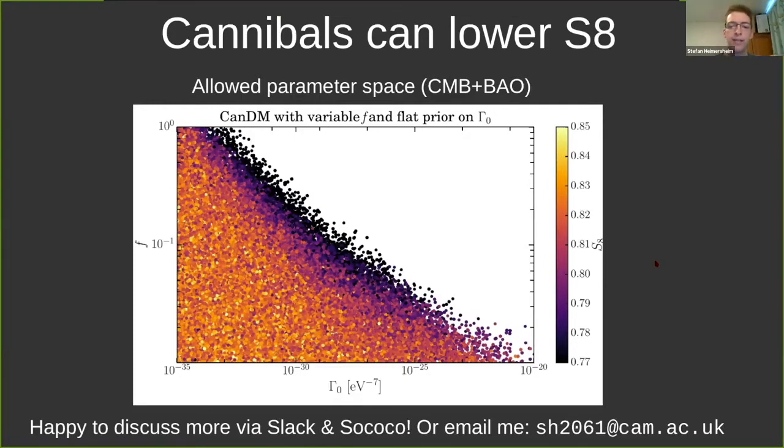The stronger the interaction, the larger the scales you suppress. This looks similar to warm or even hot dark matter, we get similar suppression, but as opposed to these models, it's actually compatible with CMB while you get a nice suppression. What I'll show here is our MCMC results from using CMB and BAO constraints. On the y-axis is the fraction of matter that's cannibalistic, ranging from one at the top to ten to the minus two at the bottom. On the x-axis is the interaction strength from weak on the left to strong on the right. All the points are the allowed parameter space.